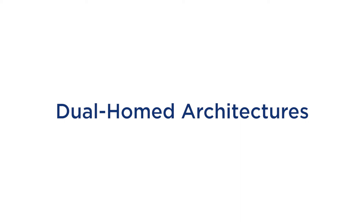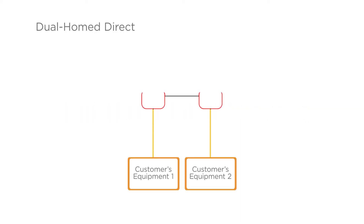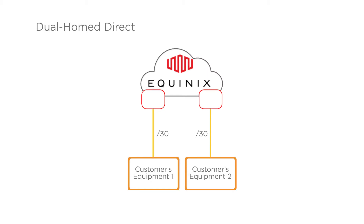Dual-homed architectures. Dual-homed direct — this is offered in Americas only. The customer is using a flat network, and wants a /30 on each link without having any LAN address. It may go to their firewall or switch. Equinix is not responsible for the failover mechanism. The customer gets by default a /30 or /126 free of charge from Equinix.